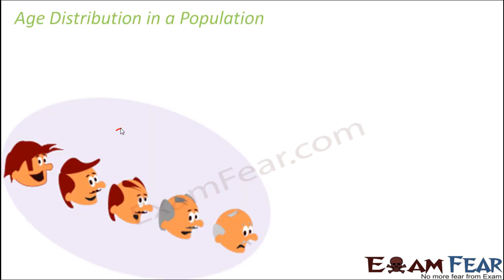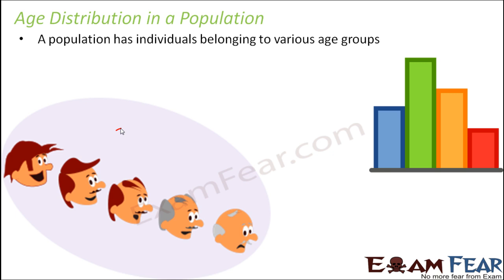Let us now talk about age distribution in a population. When you think of an individual, there is a specific age associated with that individual — an individual can be 10 years old, 25 years old, or 60 years old. But when it comes to a population, which consists of a huge number of individuals, some might be 10, some 25, some 55. So in a population, what we talk about is age distribution.